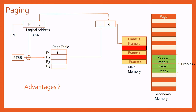What is the advantage of paging? The first advantage is non-contiguous memory allocation. The biggest problem in contiguous memory allocation was external fragmentation — we had free space but couldn't store a process because it wasn't contiguous. With paging, since page and frame sizes are equal, any free frame can hold any page. So external fragmentation does not occur. This is the main advantage.